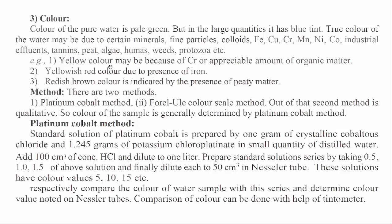Examples: 1. Yellow color may be because of Cr or an appreciable amount of organic matter. 2. Yellowish-red color is due to the presence of iron. 3. Reddish-brown color is indicated by the presence of peaty matter. Method: There are two methods — 1. Platinum-cobalt method, and 2. Forel-Ule color scale method. The second method is qualitative, so the color of the sample is generally determined by the platinum-cobalt method.